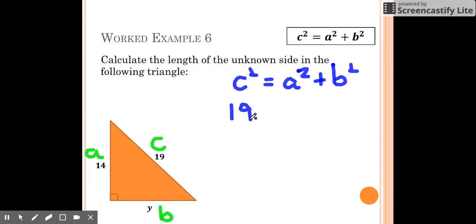19 equals A squared, which is 14, and B we don't know - it's a Y, so we'll replace it with that Y.